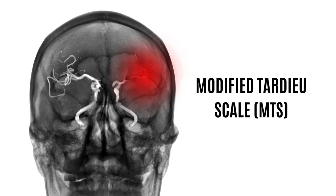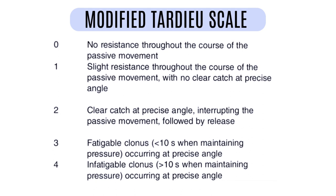Next is the modified Tardieu scale, simply known as MTS. For a score of zero, there is no resistance to the range of motion. For a score of one, there is no clear catch, however there is some slight resistance through the range of motion. For a score of two, there is a clear catch at any angle of the range of motion, and there is also a release of the catch. For a score of three, there is fatigable clonus of less than 10 seconds. And for a score of four, there is non-fatigable clonus of more than 10 seconds.